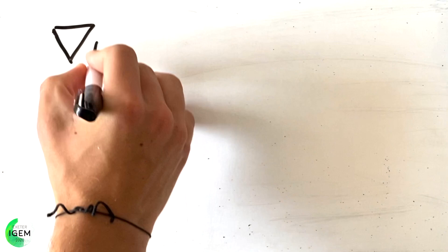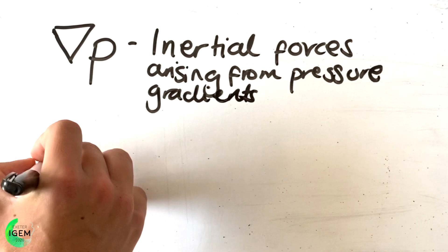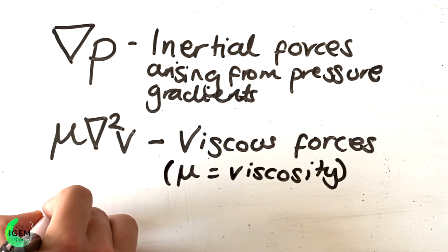We can have a look at what each term in the equation actually means. This term represents the inertial forces arising from pressure gradients in the fluid, whereas this term here represents the viscous forces. This last term represents the forces due to gravity.